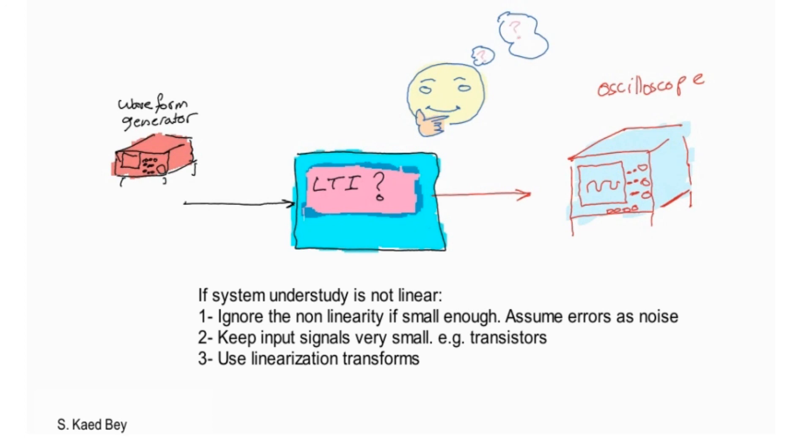Alternatively, you could use homomorphic signal processing, some sort of linearizing transforms, that can be applied in order to linearize some nonlinear behaviors.